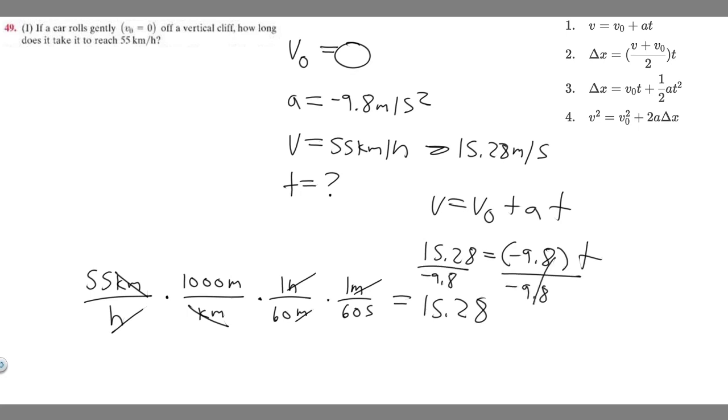And that's going to give us t. So 15.28 divided by minus 9.8, it's going to give you minus 1.5589 and so on. And you can round this however you want. I'm just going to round it to 0.6. So it's going to be minus 1.6, just rounding this up.